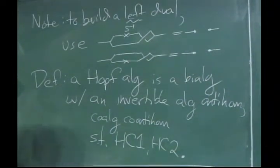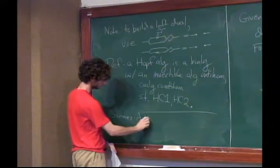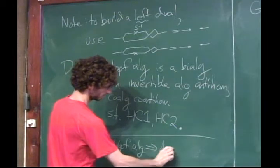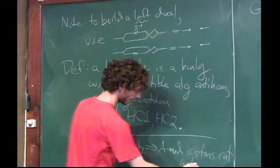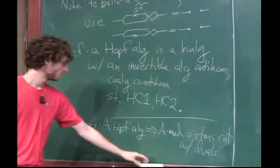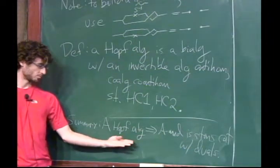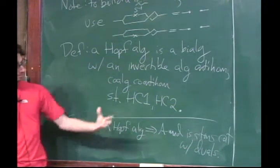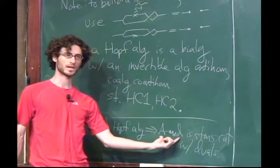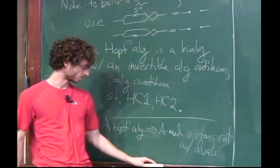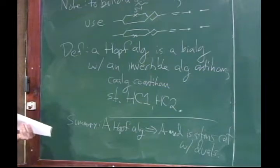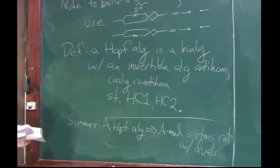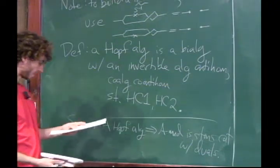To state it explicitly: if A is a Hopf algebra, then A-mod is a tensor category with both left and right duals — which is what we wanted. The more general story is that we'll be building Hopf algebras coming from quantum groups, and the representation category of those Hopf algebras are tensor categories. We're going to put more structure yet on these Hopf algebras, and that's the start of the structure of a three-dimensional field theory.